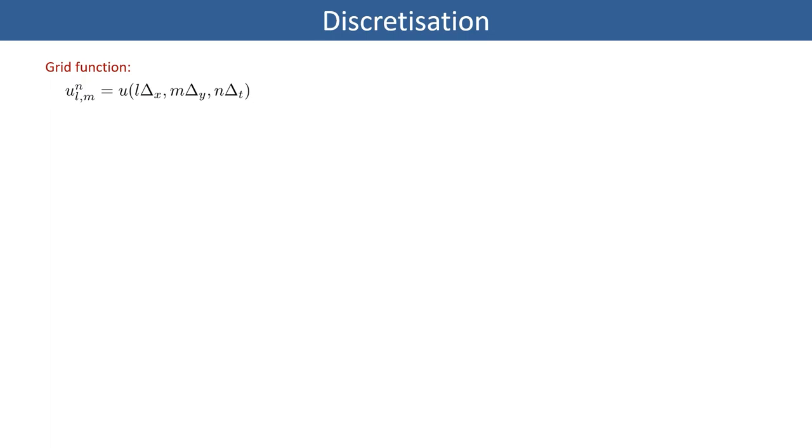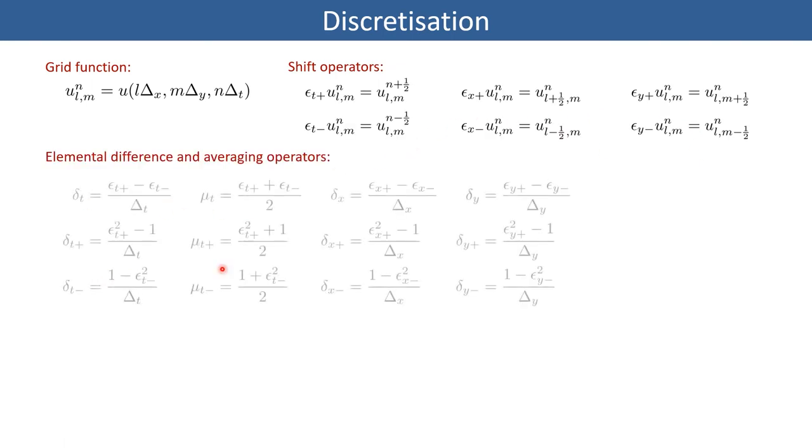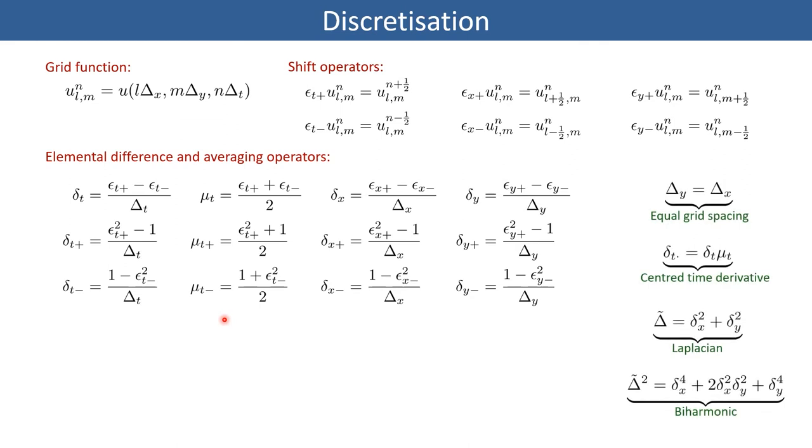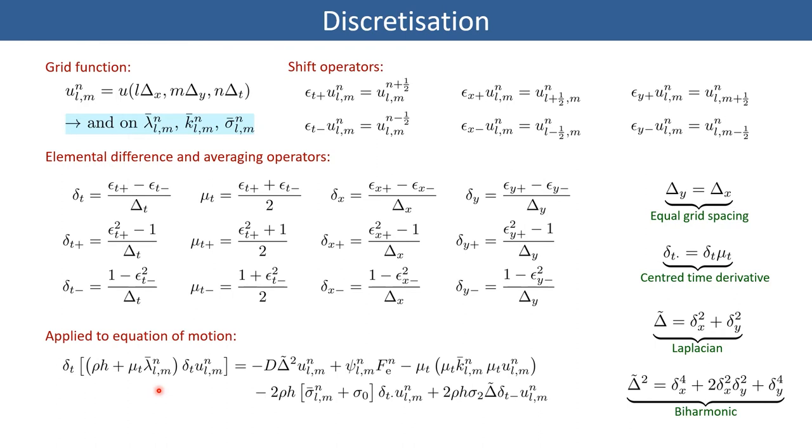To turn the model into a synthesis algorithm, we need to discretize the system, here in both space and time. For that, we define shift operators from which we can construct difference and averaging operators that can act upon the 2D grid function U_lmn that we see here at the top. These operators are then applied in a specific manner to the equation of motion, as you can see here at the bottom of the slide.